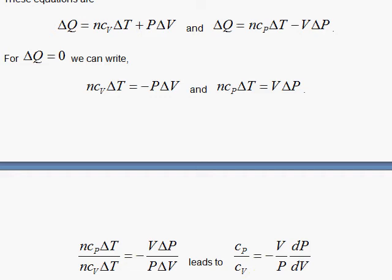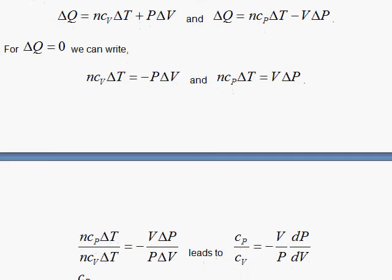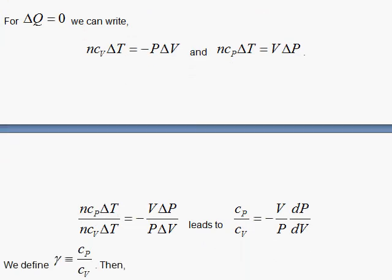This ratio, C sub P over C sub V, the ratio of specific heats—constant pressure, constant volume—we let be gamma to clean up our notation. We have here the derivative of the pressure with respect to the volume. So we have a differential equation.